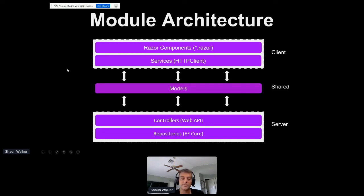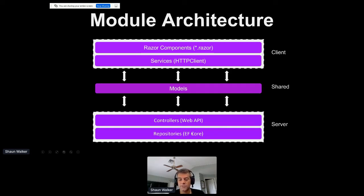Module architecture for Octane is a little different than DNN because it is a single page application. You would build out a client-side project — there are three different projects making up a module: the client-side project where your Razor components are built along with services as wrappers for calling back-end APIs, a shared models project shared between client and server so you have one set of models for both, and on the back end you have Web API controllers and repositories interacting with the database. You also need to create the ability to provision your tables into the database, and it works in a similar manner to DNN.